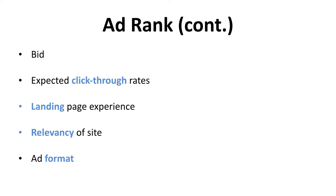First, the expected click-through rate is determined by Google based on their prediction on how many clicks they expect to send to your site. Google always makes decisions based on the feedback from their users. You can't really control this, but you can increase it by choosing the right keyword.